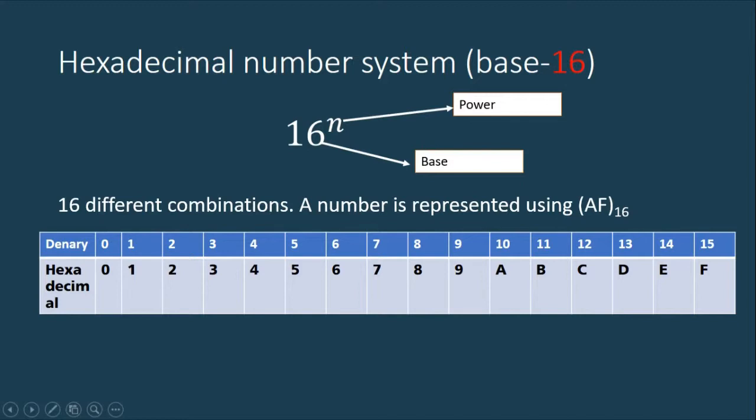And from 10, the denary number 10, to map it to the hexadecimal, we use alphabet. So the combination of numbers is from 0 to 15. And from 0 to 9, these are represented as normal numbers. And from 10 to 15, these are represented as alphabets. As you can see, A, B, C, D, E, F.